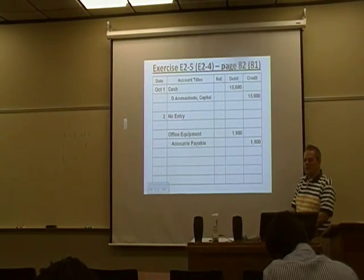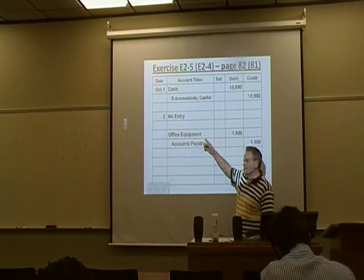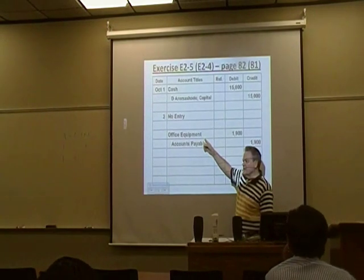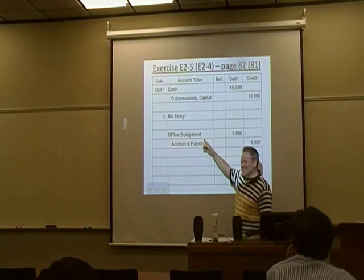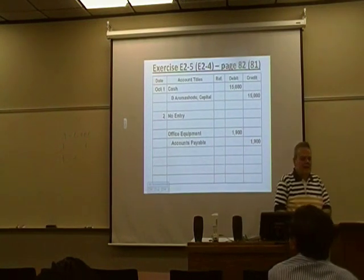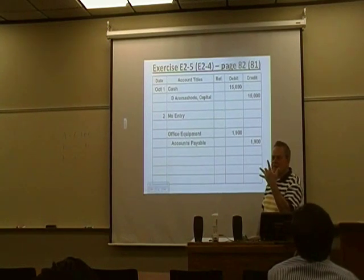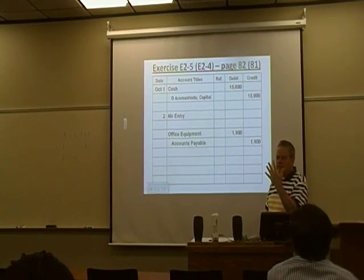We need to know on which financial statement accounts appear. Does office equipment go on the balance sheet or the income statement? Balance sheet. Did you guess? You did, and you got lucky. Would you like to know why? There are five kinds of accounts: assets, liabilities, capital, revenue, and expense — always in that order. Some go on the balance sheet; some go on the income statement. Can you say the accounting equation? Assets equal liabilities plus owner's equity. They all go on the same financial statement — the balance sheet — which leaves revenue and expense to go on the income statement.